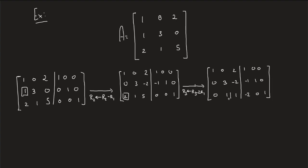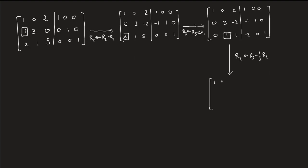Next, we perform R3 ← R3 − 2R1 to null out the leading entry in row 3. The first and second rows remain the same, and the third row becomes [0, 1, 1 | −2, 0, 1]. Then we null out the second entry in R3 by replacing R3 with R3 − (1/3)R2. The last row becomes [0, 0, 5/3 | −5/3, −1/3, 1].